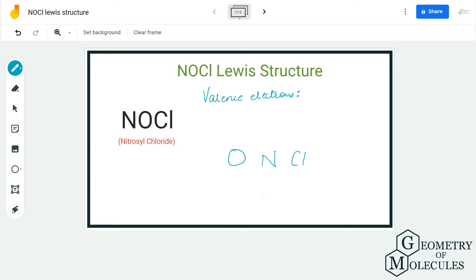Hi guys, welcome back to our channel. In today's video we are going to determine the Lewis structure for NOCl, which also has a chemical name of nitrosyl chloride. To determine its Lewis structure we first need to know the total number of valence electrons for this molecule.